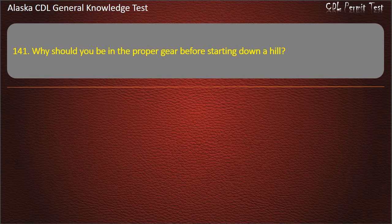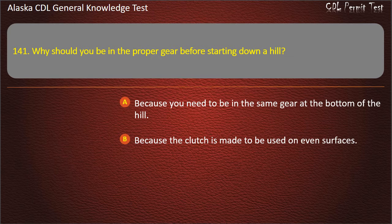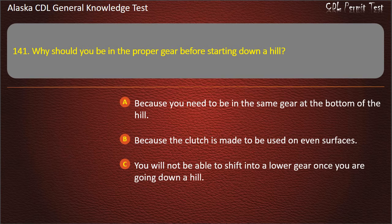Question 141. Why should you be in the proper gear before starting down a hill? Because you need to be in the same gear at the bottom; because the clutch is made to be used on even surfaces; or you will not be able to shift into a lower gear once going downhill. Answer: You will not be able to shift into a lower gear once you are going down a hill.